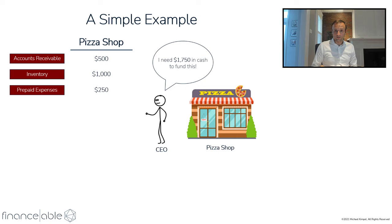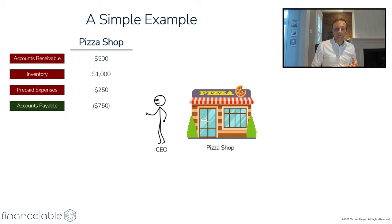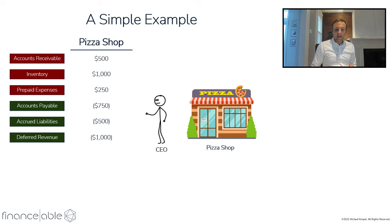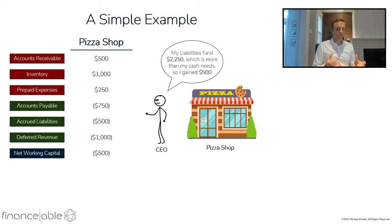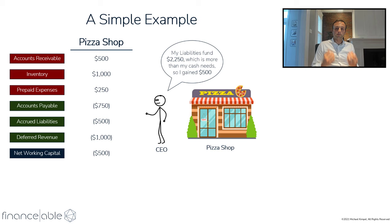Now let's look at liabilities, which are a little different this time. We're being lent more by our inventory supplier, so we now have $750 of accounts payable. Our accrued liabilities are higher because we have more rent that we owe in the future but are not paying now. And we have more pizza subscriptions, so we have more dollars in from customers. In short, we're being lent much more money than in the previous example. All in, we have working capital of negative $500. In plain English, we had $1,750 to fund, but we now have $2,250 of money lent to us. The difference — $500 — is actually a gain for us as a result of opening this pizza shop. This is actually the positive side of negative working capital: you're being lent more in liabilities than the assets you have to invest in, so you actually make money from the liabilities.